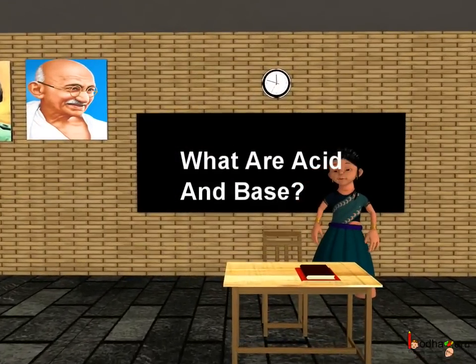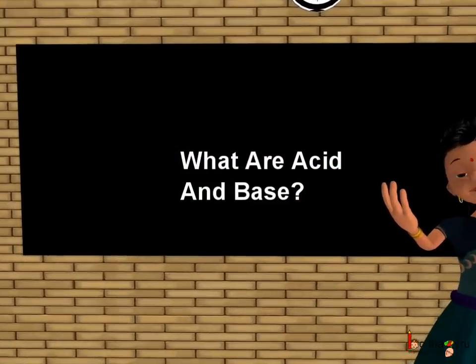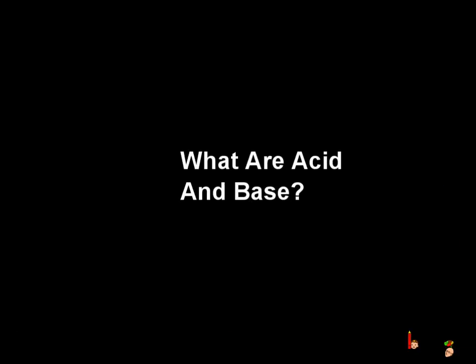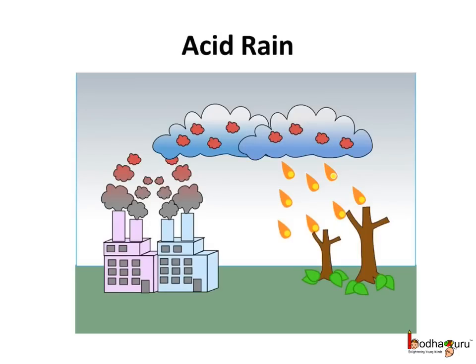Good morning children, today we shall learn about acid and base. We already know about acid rain. Harmful air pollutants like carbon dioxide and other oxides get mixed with raindrops and form harmful substances called acid. This acid rain reduces the fertility of soil and also damages trees and monuments.